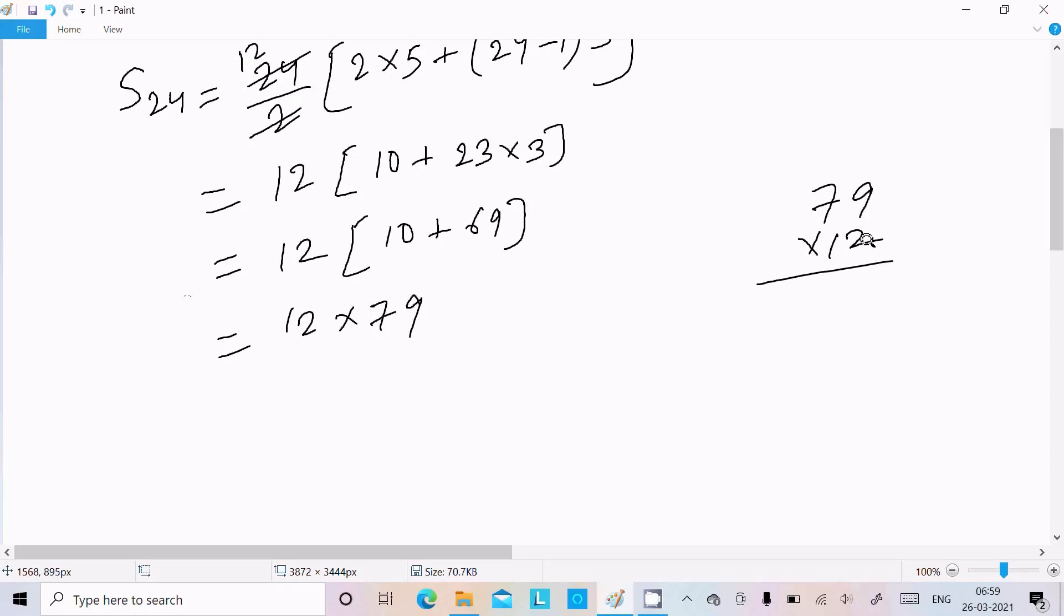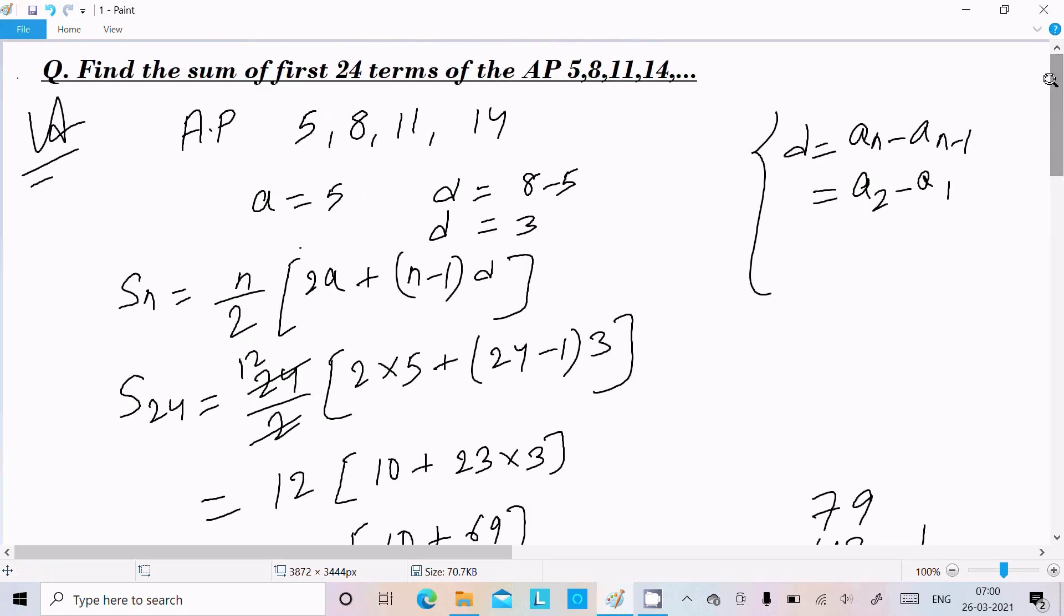Doing the multiplication: 9×2 is 18, carry 1... [calculation steps]... this comes to 948. So S_24 equals 948. The sum of the first 24 terms is 948.